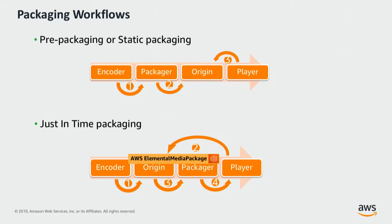Just-in-time packaging is a breakthrough concept that came in to optimize storage capabilities and provide a future-proof format of packaging. In this approach, the content is encoded by an upstream encoder and sent to the packager. The packager ingests the content and stores the metadata but doesn't perform any packaging action at that point. When a player makes a request for a particular format, the packager dynamically converts the content to the requested format and delivers it. This optimizes storage and lets you add more packaging features without needing to retranscode all assets, as you would in static packaging.